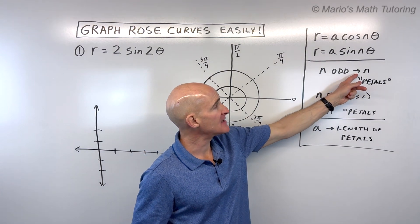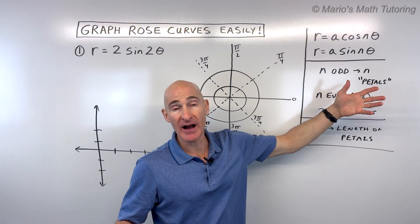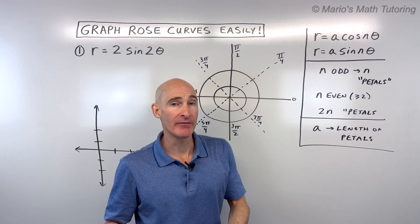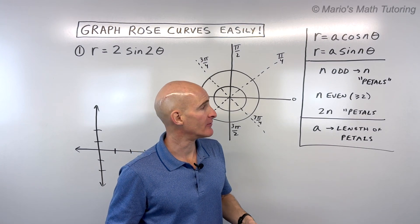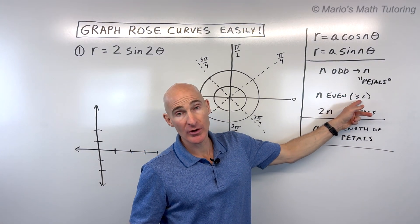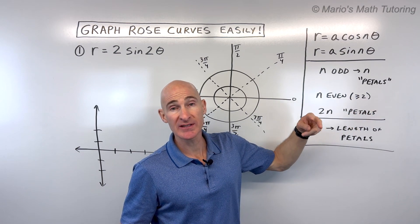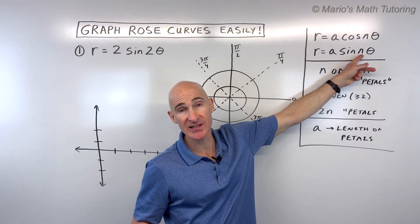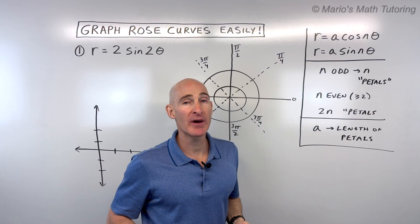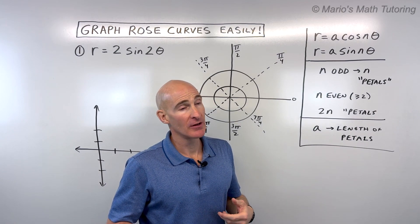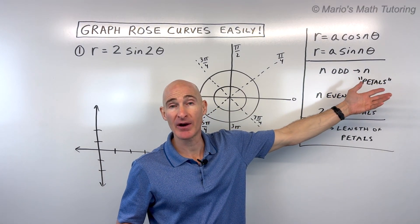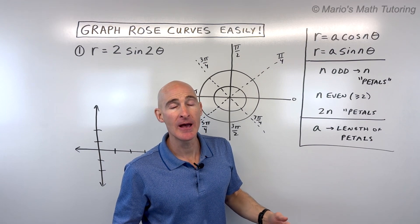If n is an odd number like 3, 5, or 7, that's exactly how many petals you'll have. But if n is an even number greater than or equal to 2 — so for example 2θ, 4θ, or 6θ — you'll actually have twice the number of petals. So if n is 2 you'd have 4 petals, if it's 4 you'd have 8 petals, if it's 6 you'd have 12 petals.